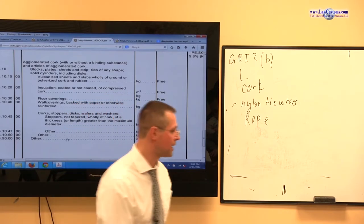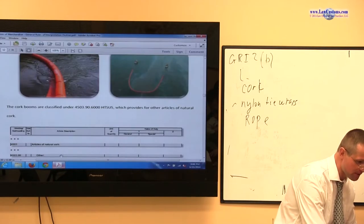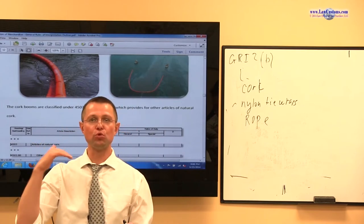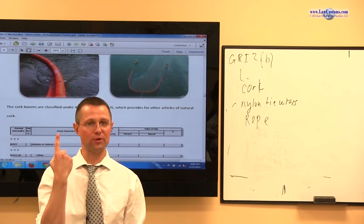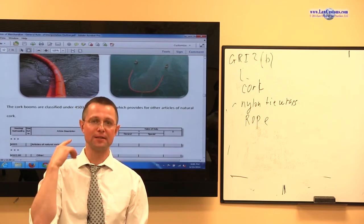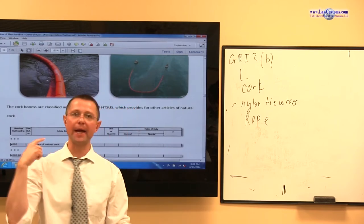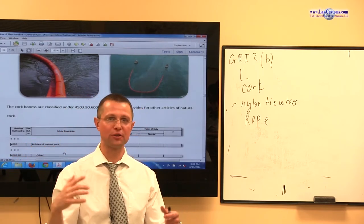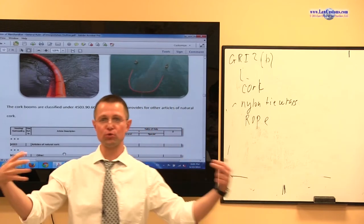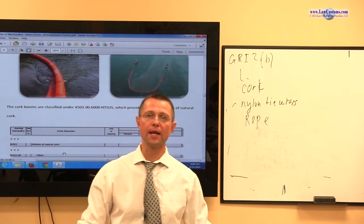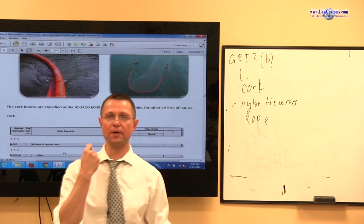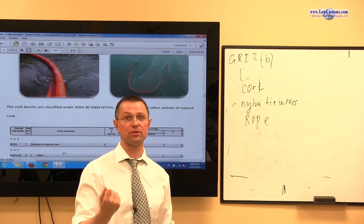So in a cork boom example, what we have is a combination product which is not classifiable under two or more headings. It is classifiable only under one heading. And because it is a combination, it is not just cork. It is made out of nylon. There is a rope which holds the whole thing together. Under the GRI-2B, the product has been held to be classifiable as article of cork.